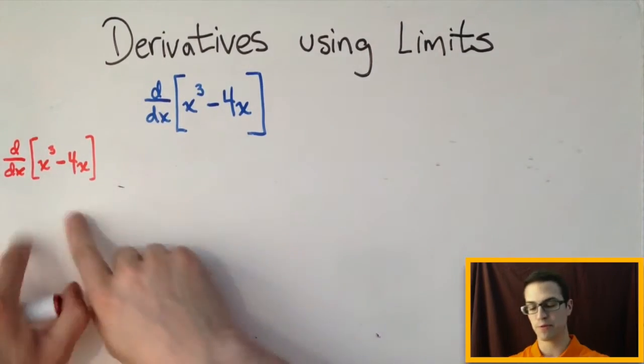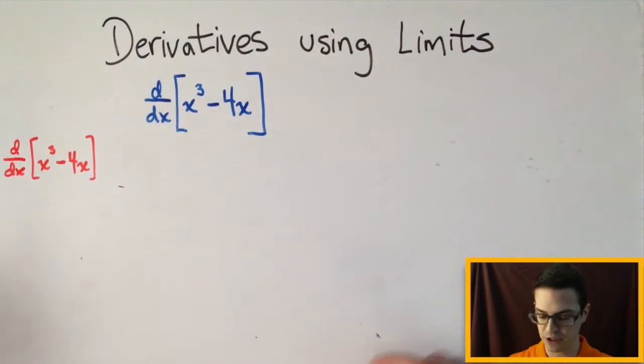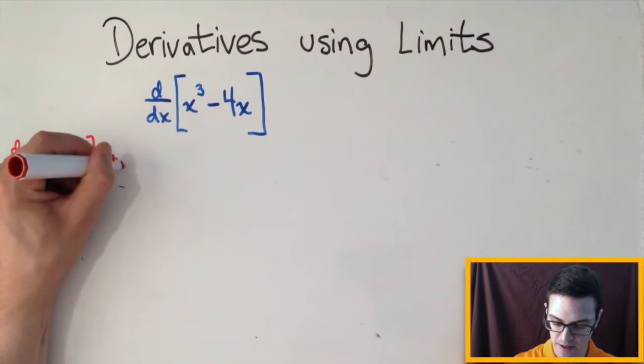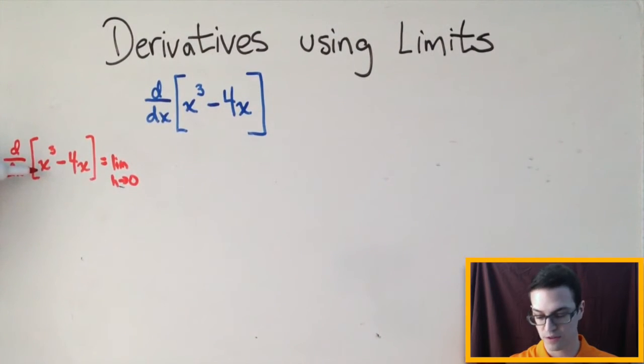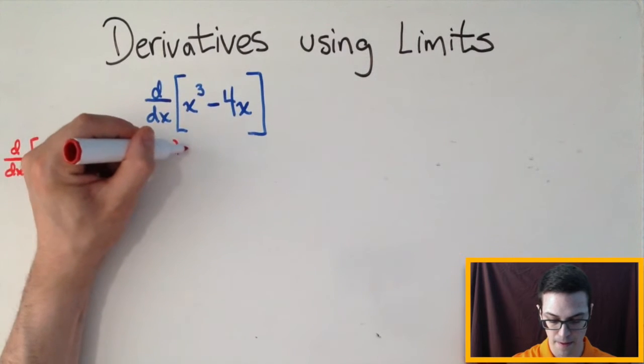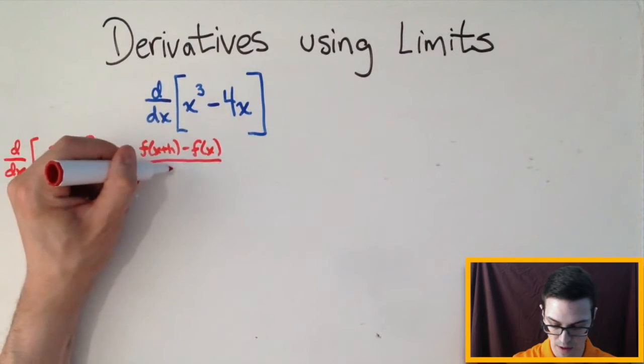Okay, so the first thing I'm going to do is rewrite this down here, and then rewrite it using the limit definition of derivative. So this is going to be equal to the limit as h goes to 0 of f of x plus h minus f of x all over h.